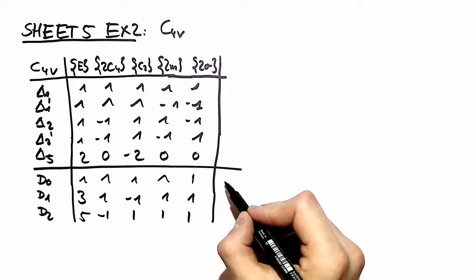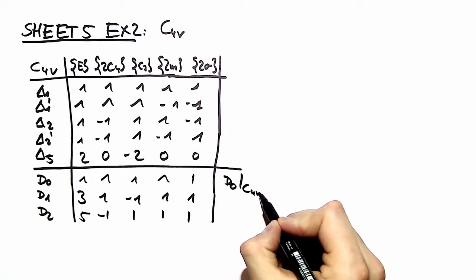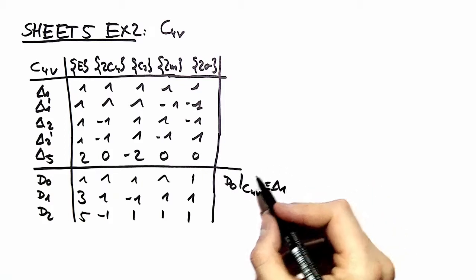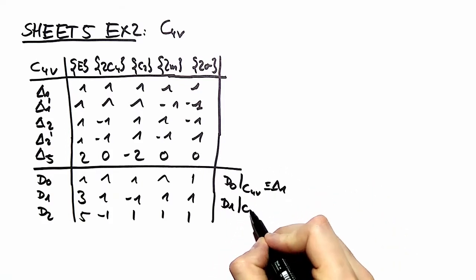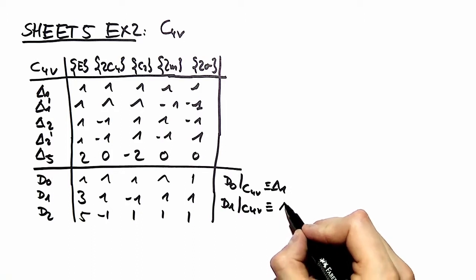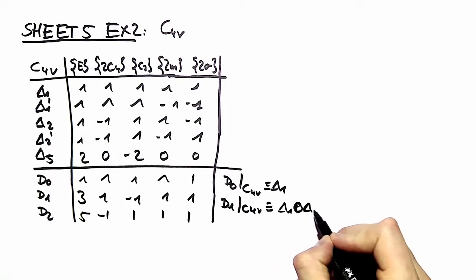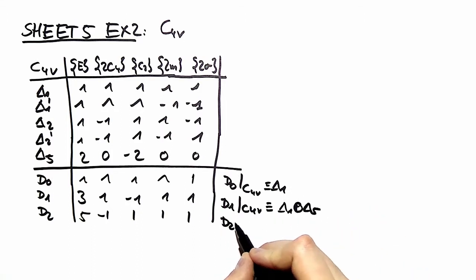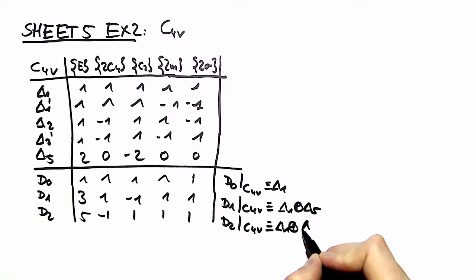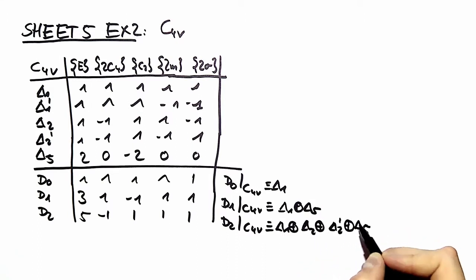So d0 in the presence of C4v is nothing else than delta 1. And d1 in the presence of C4v is nothing else than delta 1 plus delta 5. And d2 in the presence of this symmetry is delta 1 plus delta 2 plus delta 2 prime plus delta 5.